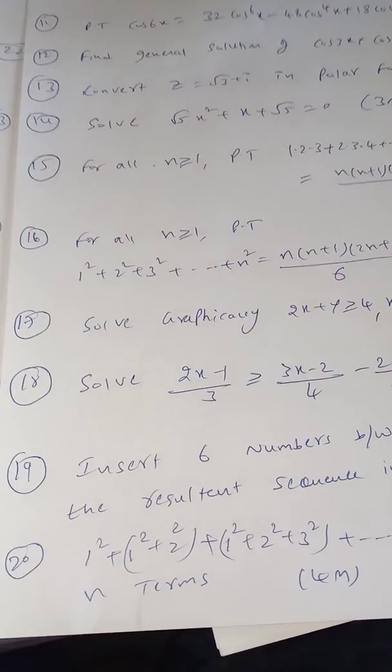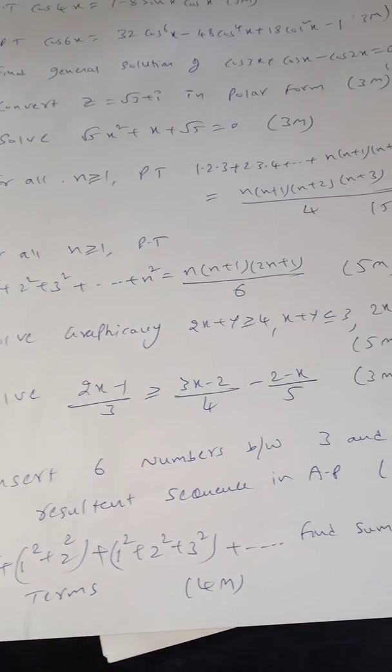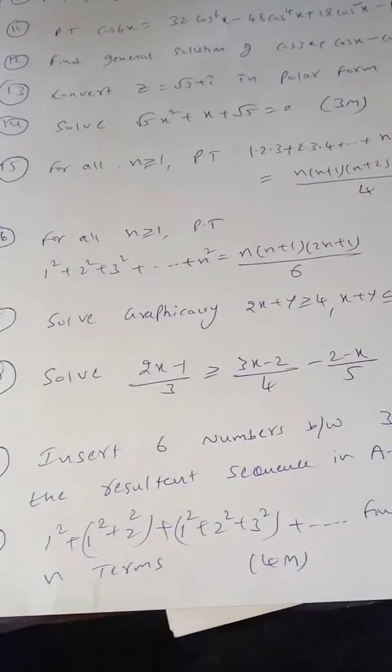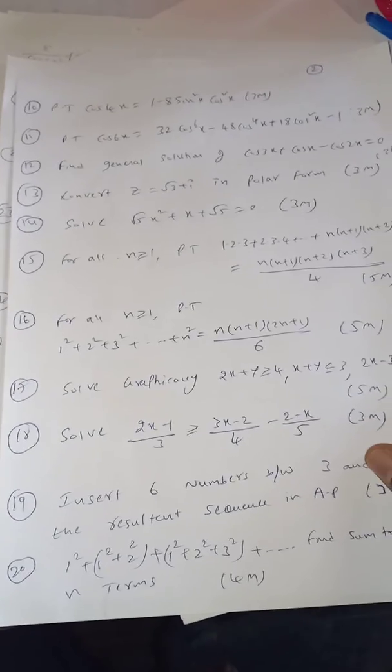Question 20, 1 square plus 2 square plus 1 square plus 2 square plus 3 square plus and so on. Find sum 2n terms. It is a 4 mark question. 10 marks we have now 6 plus 4. This is the 20th question.